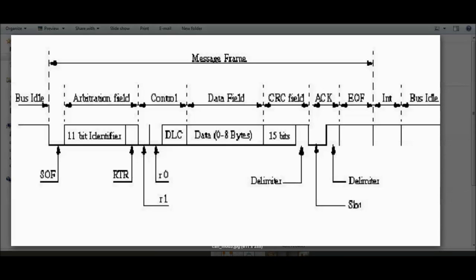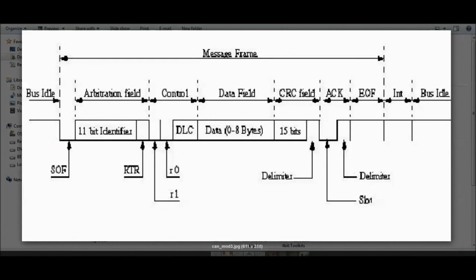The 11-bit or 29-bit identifier is encoded based on the type of message or its functionality — it is not encoded with the name of the source ECU or the destination ECU. It's based on the message content, because any of the other nodes can receive it.